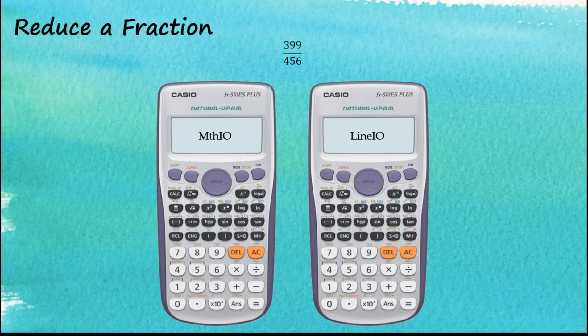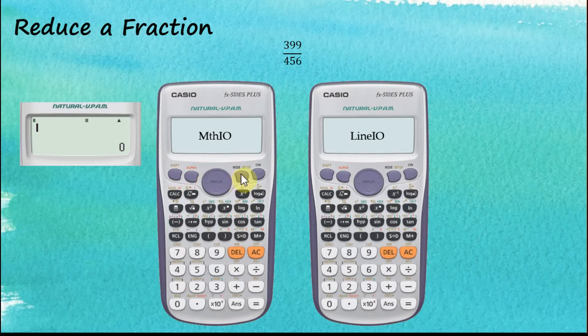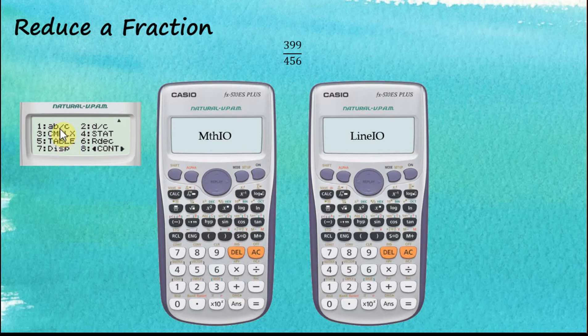In this video we are going to discuss using the Casio fx-570 ES Plus calculator to perform calculations that involve fractions. The first thing we need to do is go to the setup menu and tell the calculator how we would like our answers to display. We have two options: mixed numbers or improper fractions. I prefer mixed numbers, so I choose one.